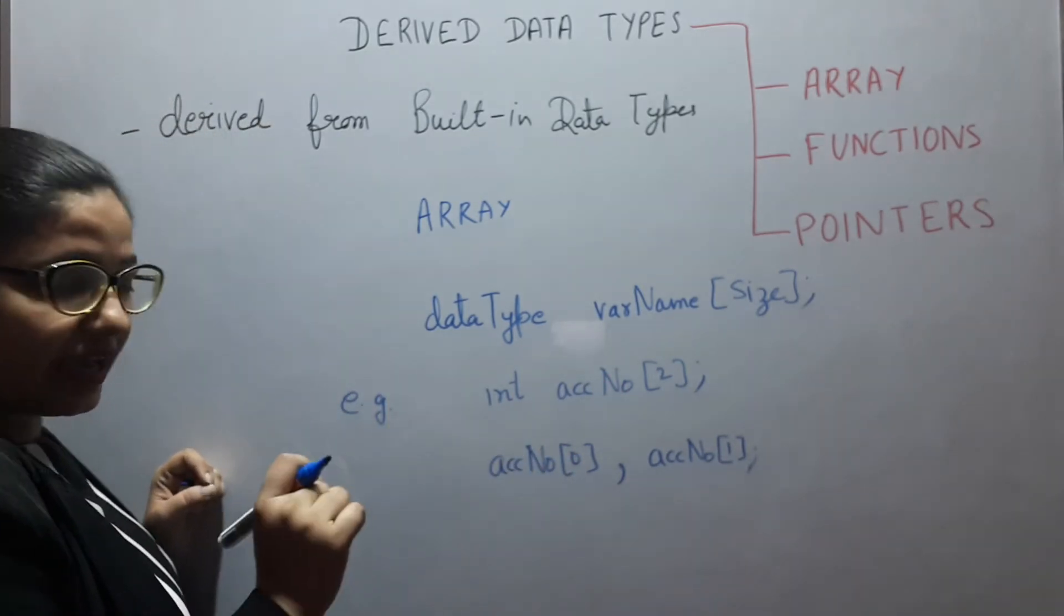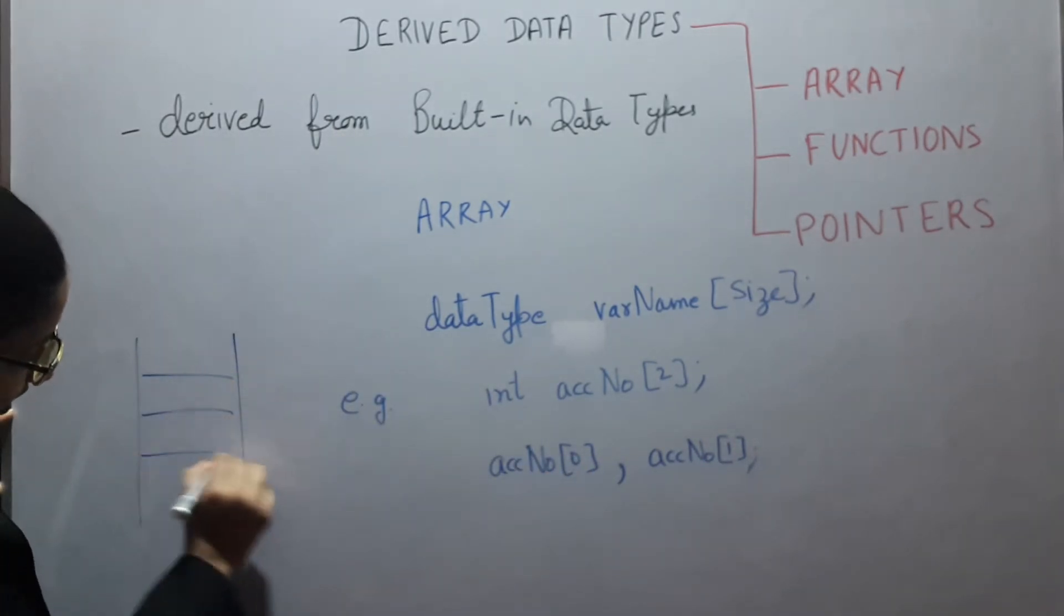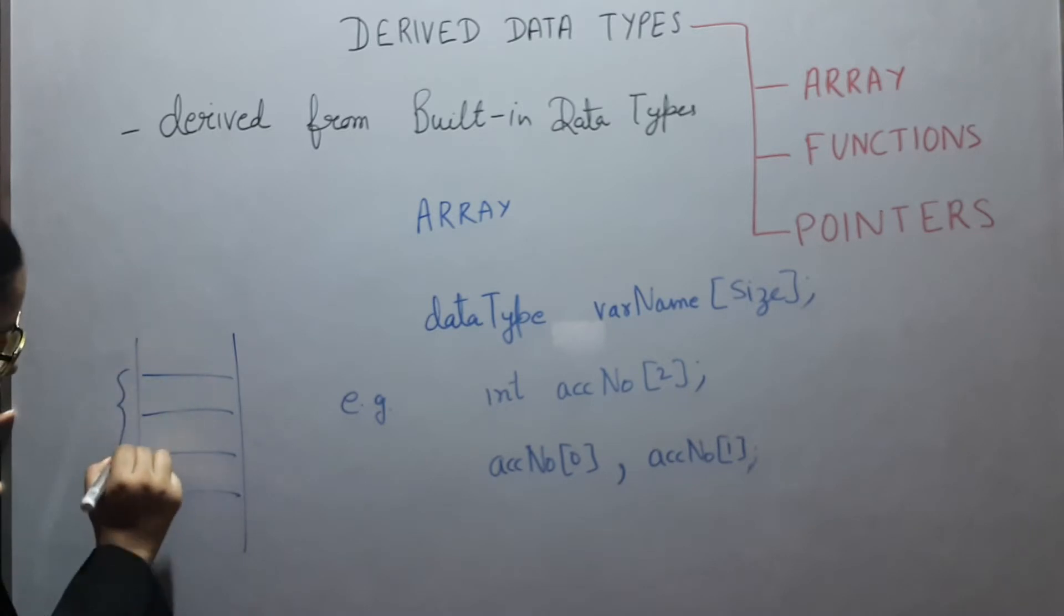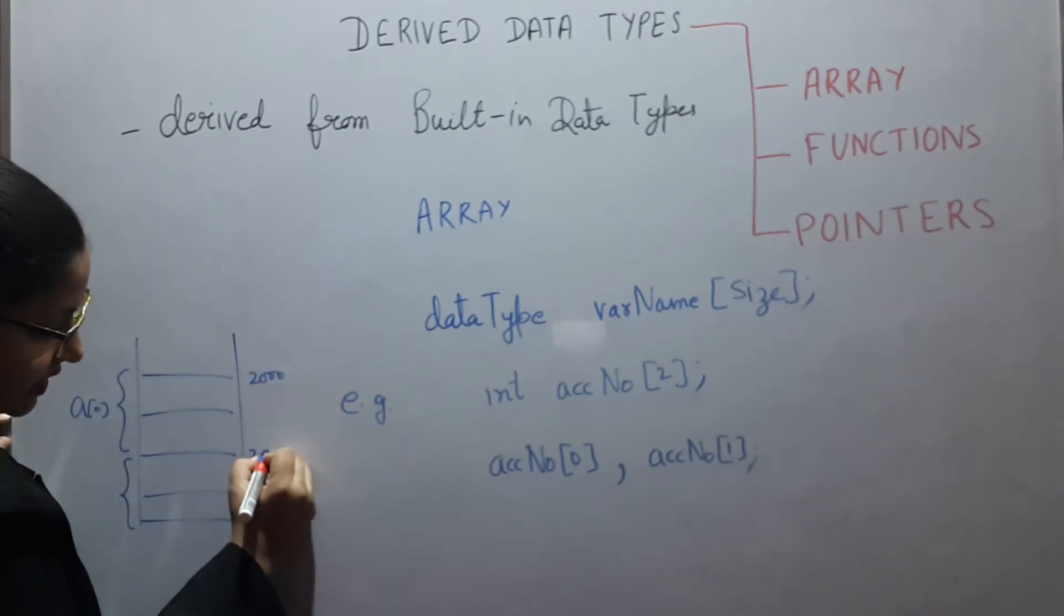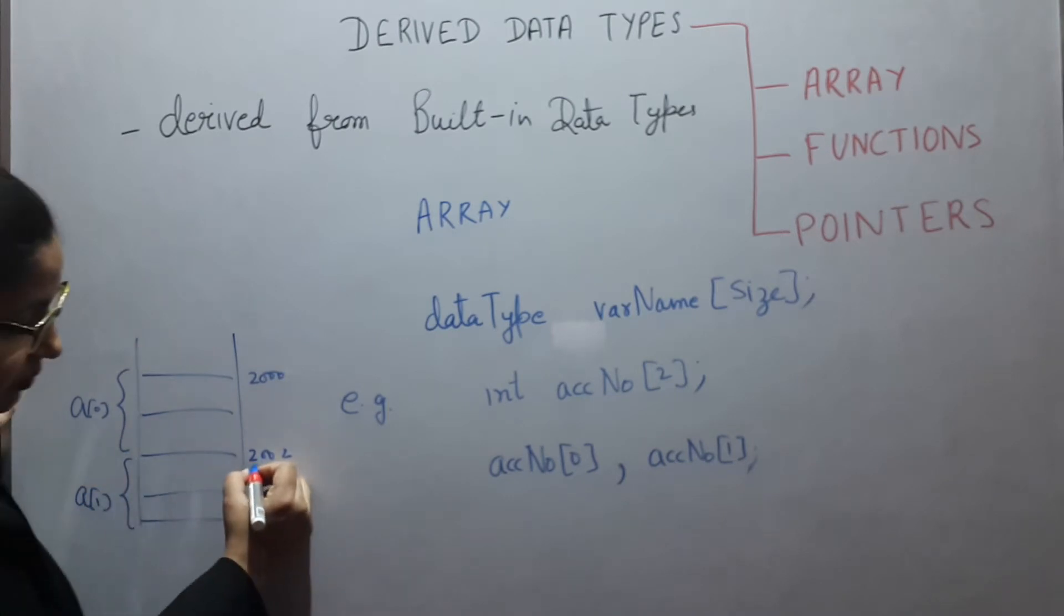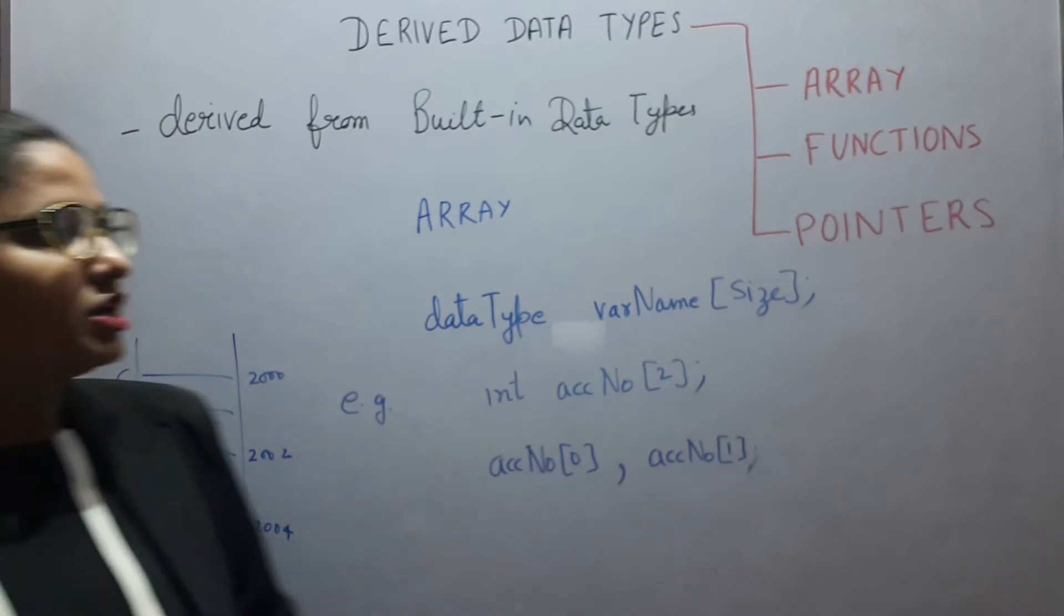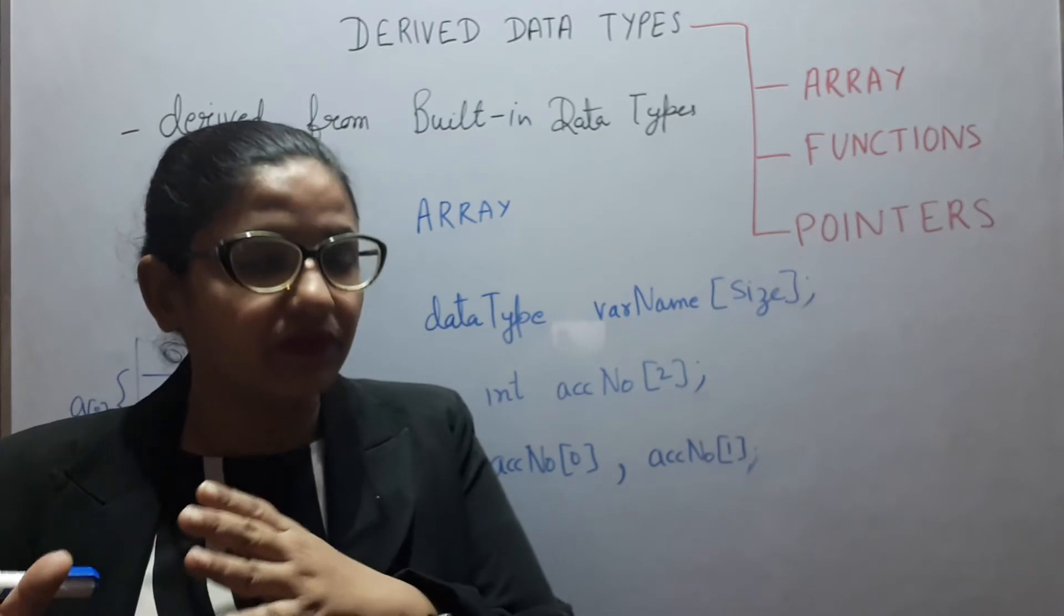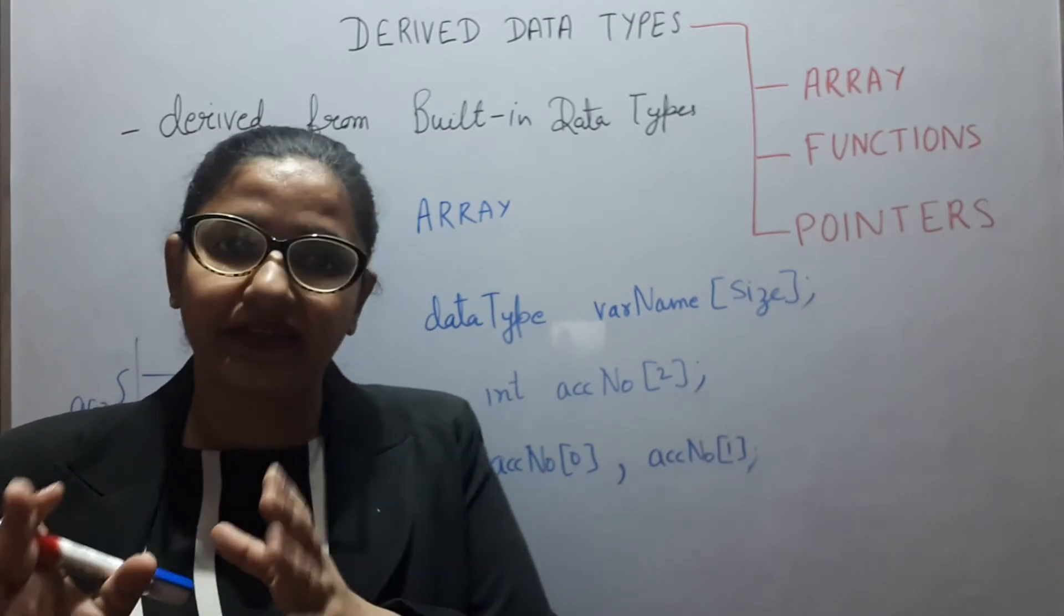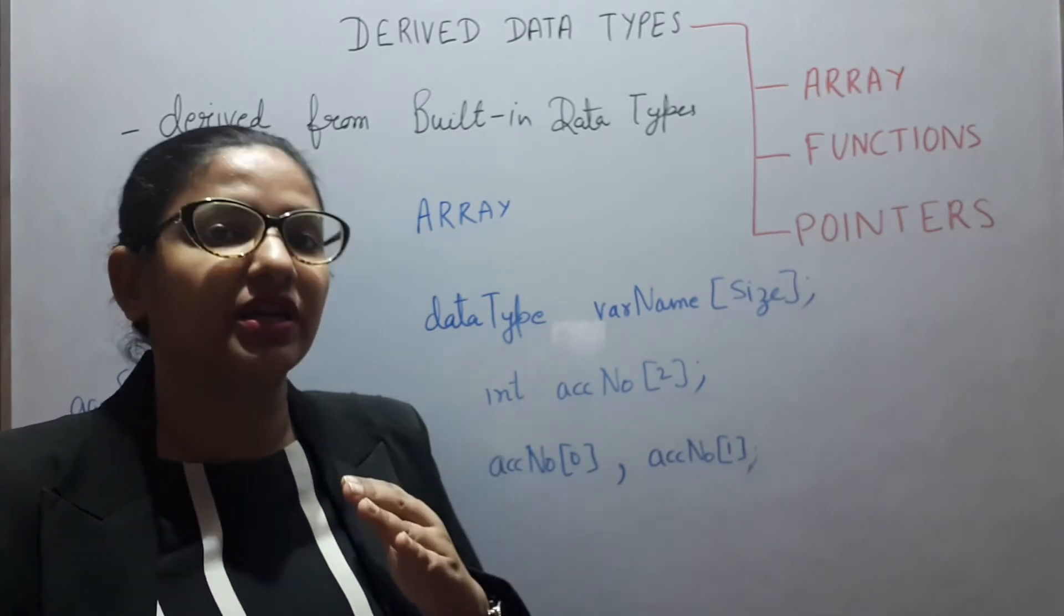And they are stored in continuous memory location. If A[0] is at 2000 memory address, then A[1] will be from 2002 to 2004. So this is the concept of array: a collection of variables of similar data types stored in continuous memory location.